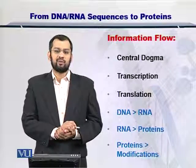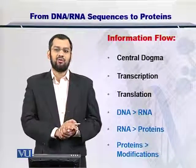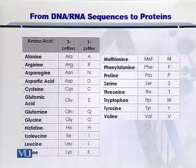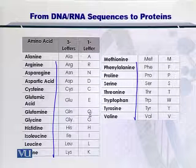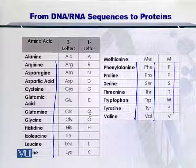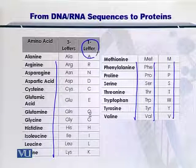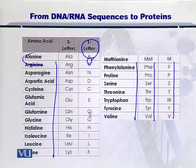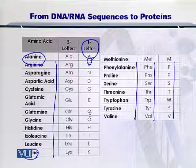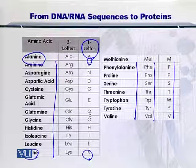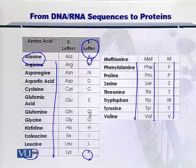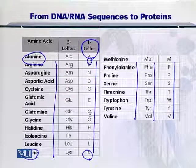Let's take a look at how this encoding process from the DNA to the RNA and then onto the proteins takes place. As you can see in this table, there are about 20 different types of amino acids listed by their names, their acronyms, and their symbols. Each amino acid is referred to by its one-letter symbol — for example, A for alanine and K for lysine. Just as you have A, C, T, G in DNA or A, C, U, G in RNA, you can represent the amino acids by 20 different alphabets as shown here.